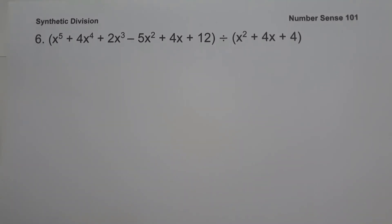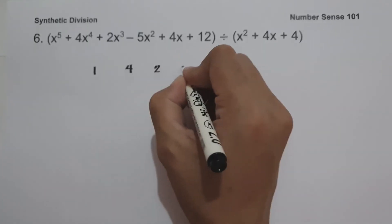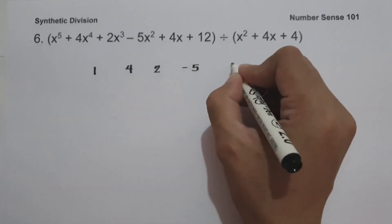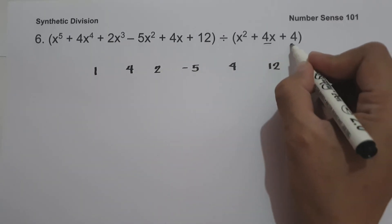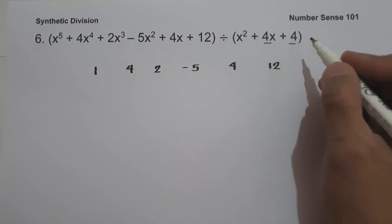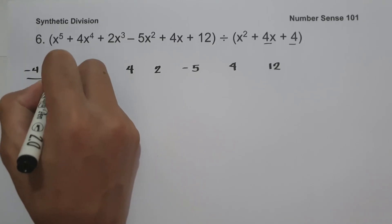On our last example, we have the quantity x to the 5th plus 4x to the 4th plus 2x cubed minus 5x squared plus 4x plus 12, divided by x squared plus 4x plus 4. We identify the coefficients of the dividend: 1, 4, 2, negative 5, 4, and 12. Since the first-degree and constant terms of the divisor are 4 and 4, we take their opposite signs: negative 4 and negative 4.